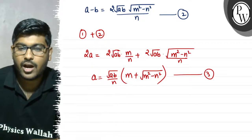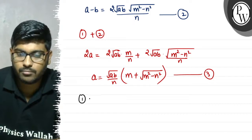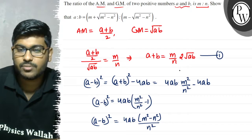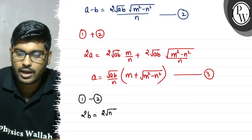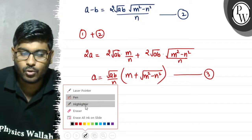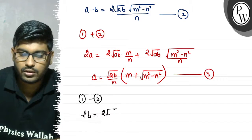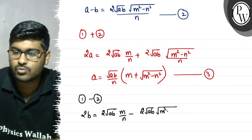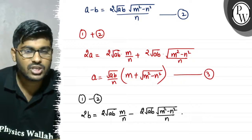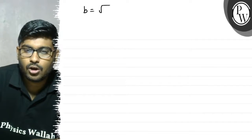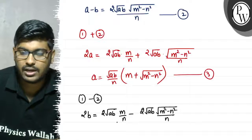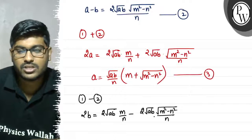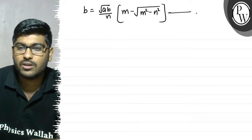Now we subtract. So 1 minus 2: a plus b minus (a minus b) gives us 2b. If we subtract here, we get 2 root(ab) into m upon n, minus 2 root(ab) into root(m² - n²) over n. Dividing by 2, b equals root(ab) over n into m minus root(m² - n²). Let's call this equation number 4.